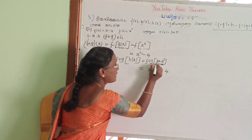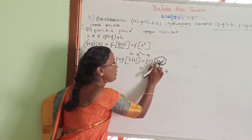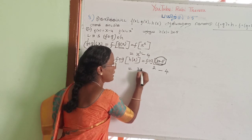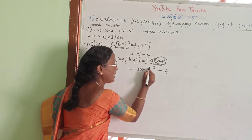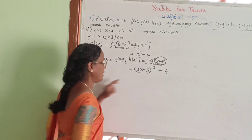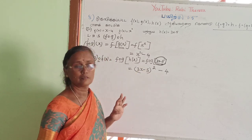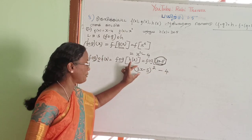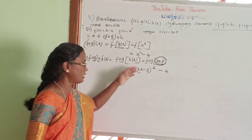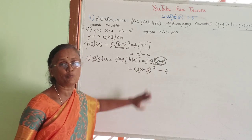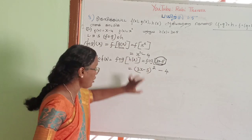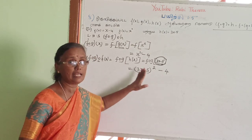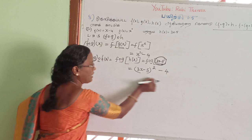This is F of X: 3X minus 5. Then 3X minus 5, so this X squared minus 4. X squared minus 4. You need to expand on top and it will be equal to the left on top.